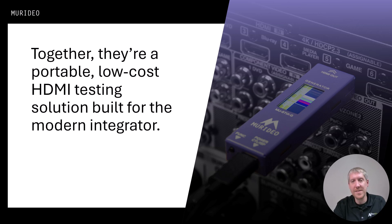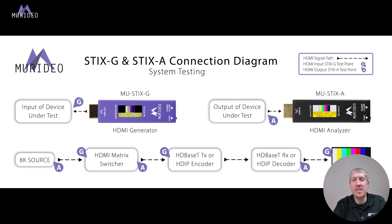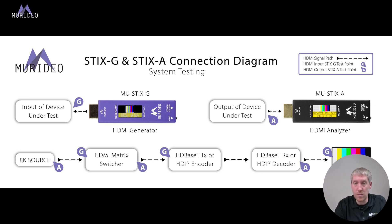Together, the STIX-A and STIX-G are a portable, low-cost HDMI testing solution built for the modern integrator. They are designed for installers, field techs, and QA teams who need to verify HDMI infrastructure quickly. The STIX-A can be used at any HDMI input or output to help isolate signal path issues, speed up troubleshooting, and provide all the data needed to bring up a new system or fix existing ones.